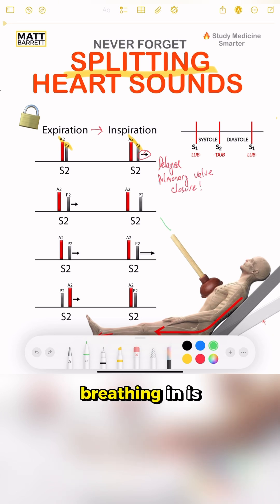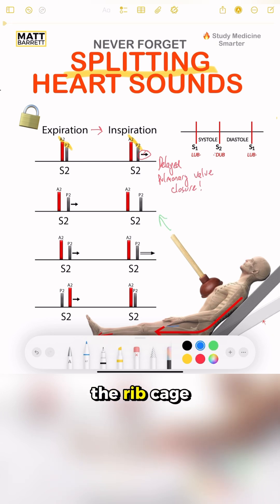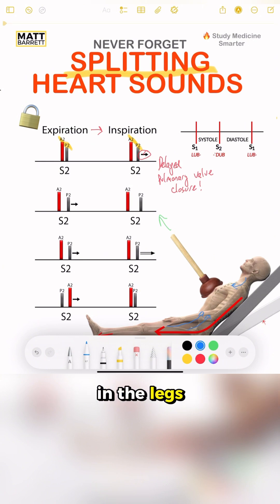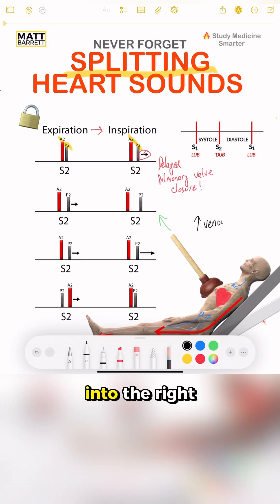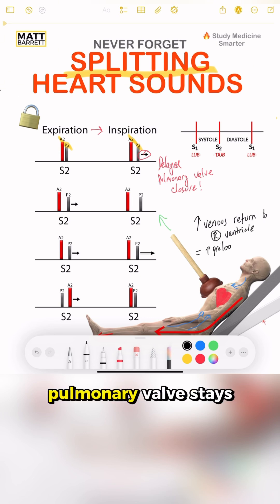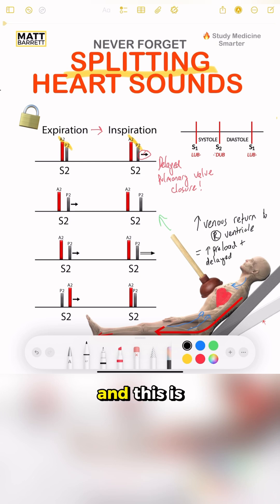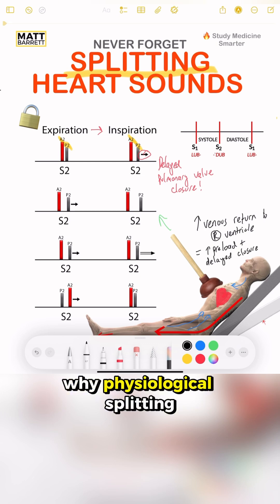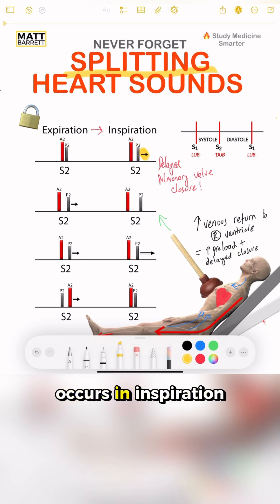But why is it delayed? Breathing in is like putting a plunger on your chest. The ribcage expands and the lower pressure sucks blood from the veins in the legs and the arms, which means more blood is sucked into the right atrium, increasing venous return to the right side of the heart. The greater preload means that the pulmonary valve stays open longer, and this is why physiological splitting occurs in inspiration.